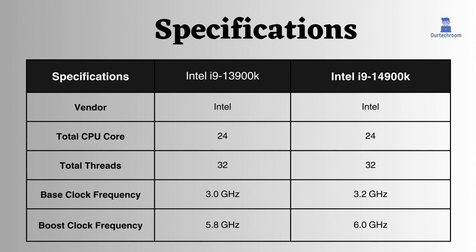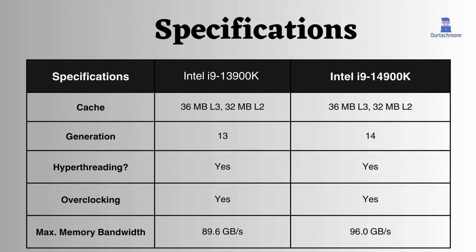Similarly, the boost clock frequency of the Intel i9-14900K is also 200 MHz higher than that of the Intel i9-13900K. Other specifications like cache size include 36 MB for L3 and 32 MB for L2 for both processors.